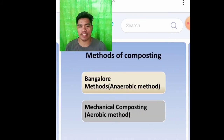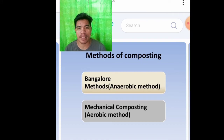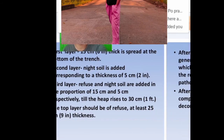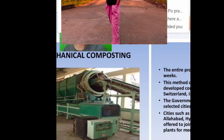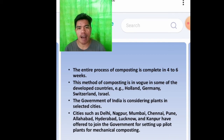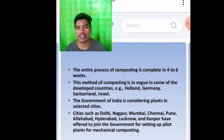Methods of composting: the Bangalore method, also called the anaerobic method; and the mechanical composting, or aerobic method. Mechanical composting is complete in four to six weeks. This method is in use in developed countries like Holland, Germany, Switzerland, and Israel. The government of India is considering plants in selected cities such as Delhi, Nagpur, Mumbai, Chennai, Pune, and Allahabad.